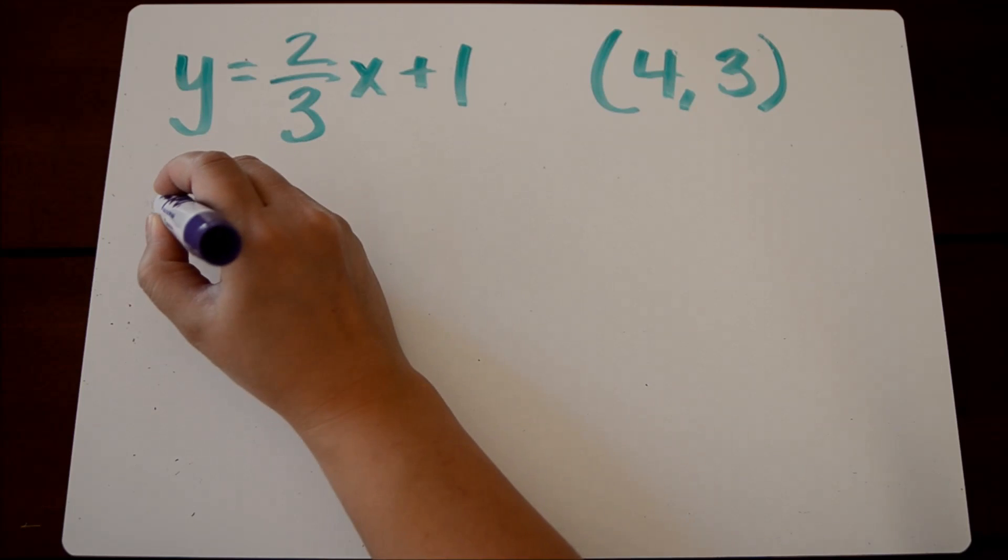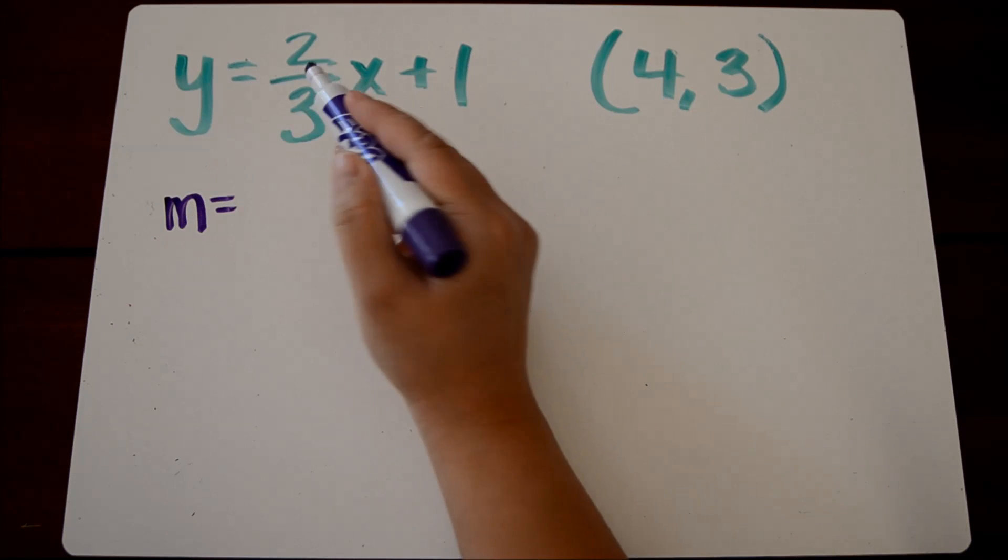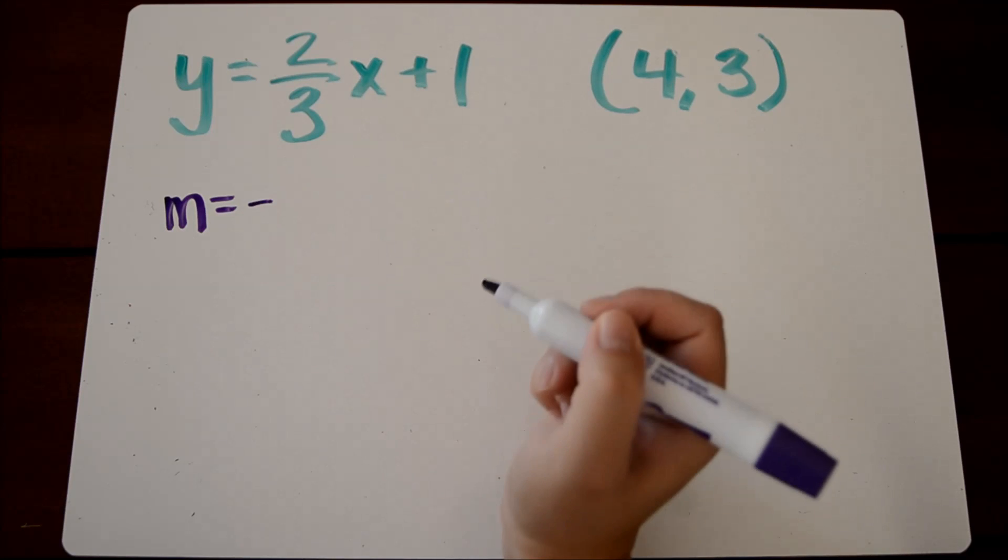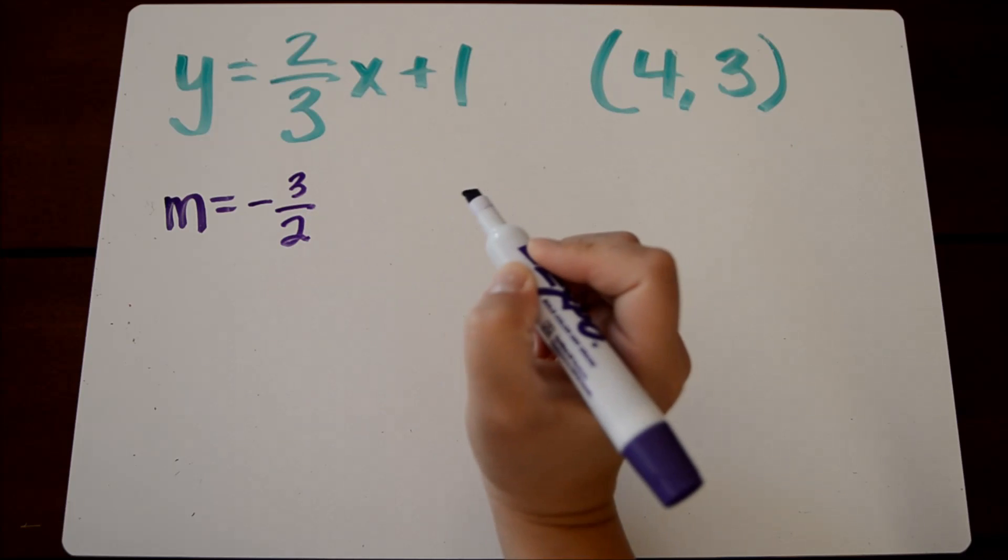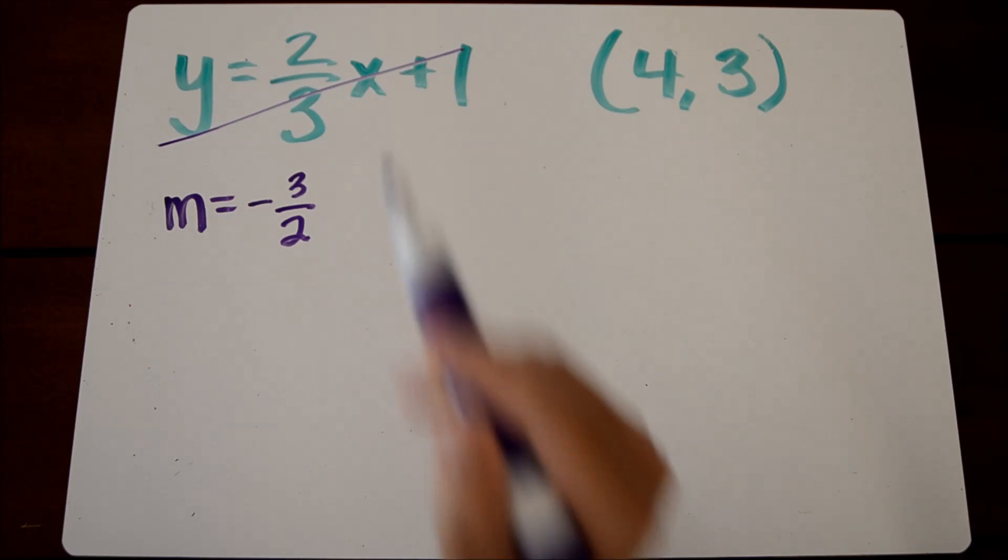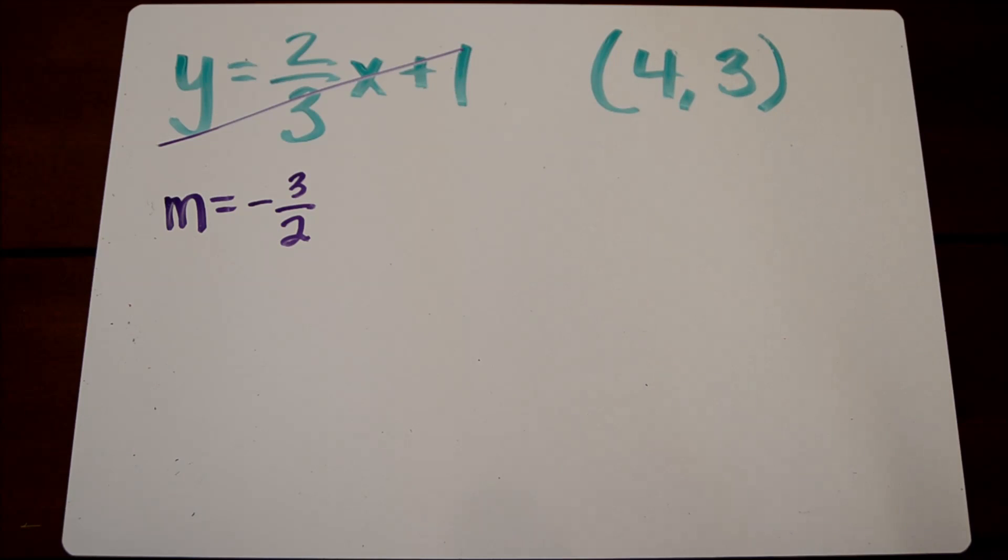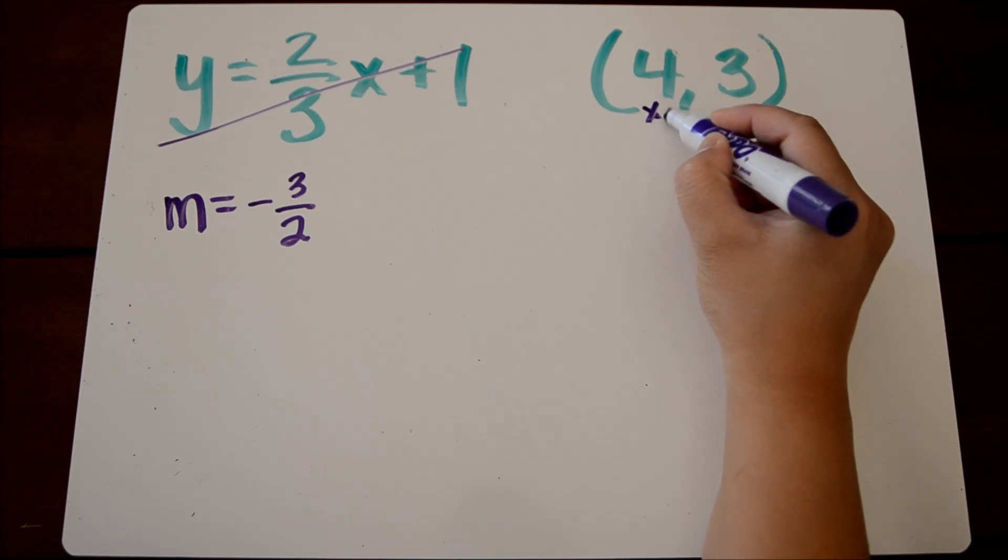We know that perpendicular lines have opposite reciprocal slopes. So the opposite of positive two-thirds would be a negative, and then the reciprocal would be three over two. And that's all we need this equation for. If we know that it goes through the point four-three, we're going to start off with point-slope form.